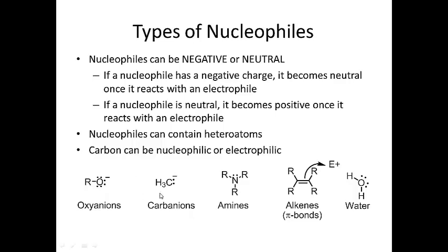Let's look at some nucleophile types. An oxyanion is just a negatively charged oxygen — that can be a nucleophile. Carbanions can also be nucleophiles; remember, the term anion refers to anything with a negative charge. Amines can be nucleophiles — they're actually better bases than they are nucleophiles, but in certain situations they make decent nucleophiles. Double bonds, specifically the pi bond electrons, can be reactive when paired with the right electrophile. Water is also a very good nucleophile. So nucleophiles can contain heteroatoms, as in the case of oxyanions, water, and amines; and carbon can also be nucleophilic, in the case of a pi bond or a carbanion.